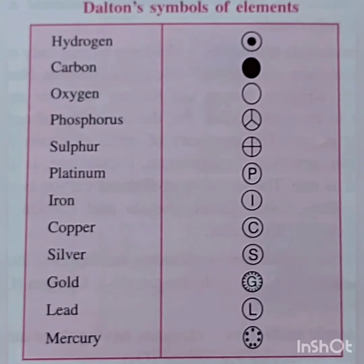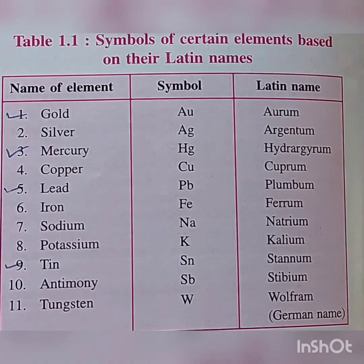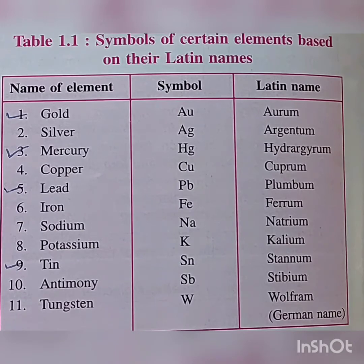Initially, when elements were discovered, they were given different symbols, represented in the table shown here. For example, hydrogen was represented with a dot in a circle, carbon as a black dot, oxygen as a circle, and so on. It became difficult to symbolize them as more and more elements were found. The better way was to give them standard symbols. Some elements were named based on their Latin names — for example, gold's symbol is Au because its Latin name is Aurum; silver is Ag because its Latin name is Argentum. Some elements were named by their German or Latin names.